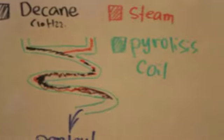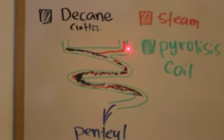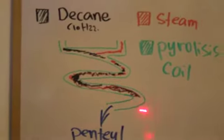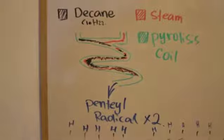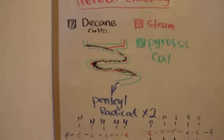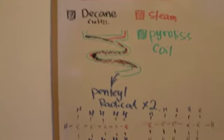You put it down through something called a pyrolysis coil. You put the decane in along with the steam. And this coil is really long - it's not just like a couple of centimeters like on the board. What happens is that it'll break the bonds between the decane and it'll break it evenly.